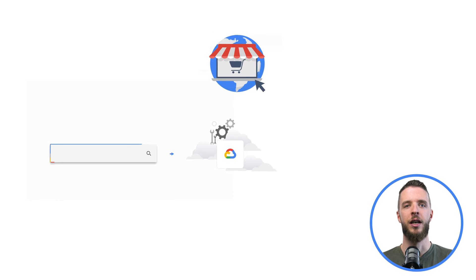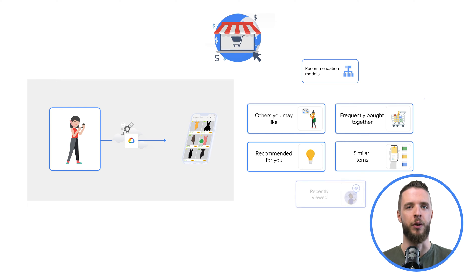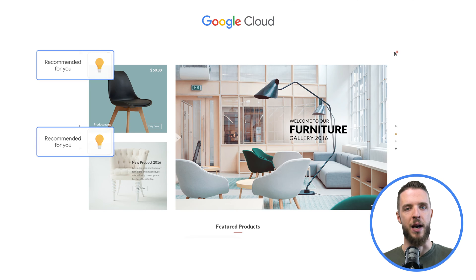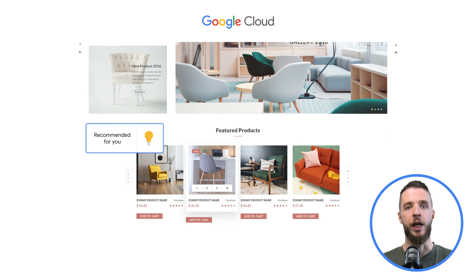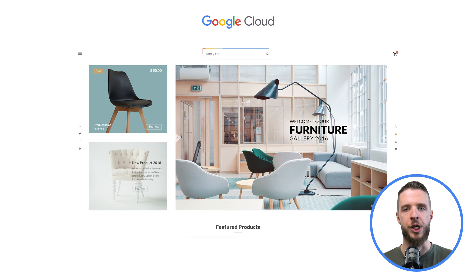In addition to e-commerce search and browse functionality, Discovery Solutions enables retailers to deliver AI-driven product recommendations designed to increase conversion and customer engagement. What models and customizations you choose depends on your business and user experience needs and where you plan to display the resulting recommendations. For example, the Recommended for You model is typically used on the home page. It predicts the next product that the user is most likely to engage with or purchase based on the shopping or viewing history of that user.